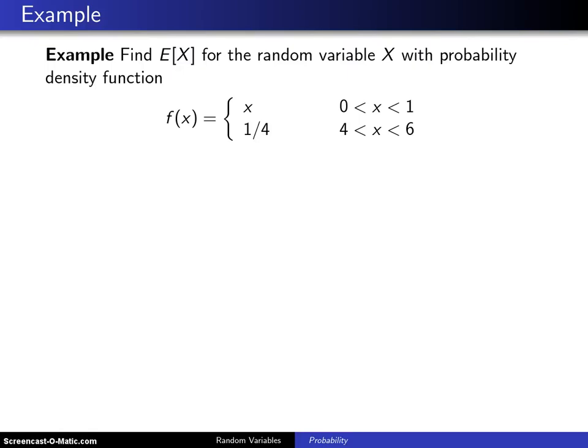Here is another example of finding the expected value for a continuous random variable X. We want to find E[X] for the random variable X with probability density function f(x) is x between 0 and 1, and f(x) is 1/4 between 4 and 6.